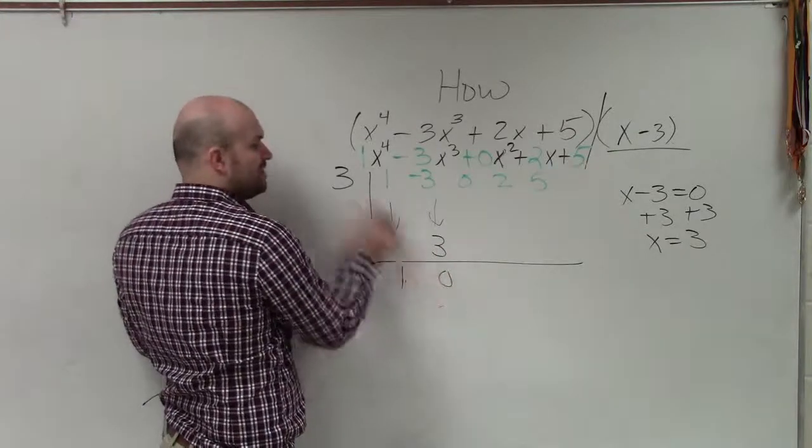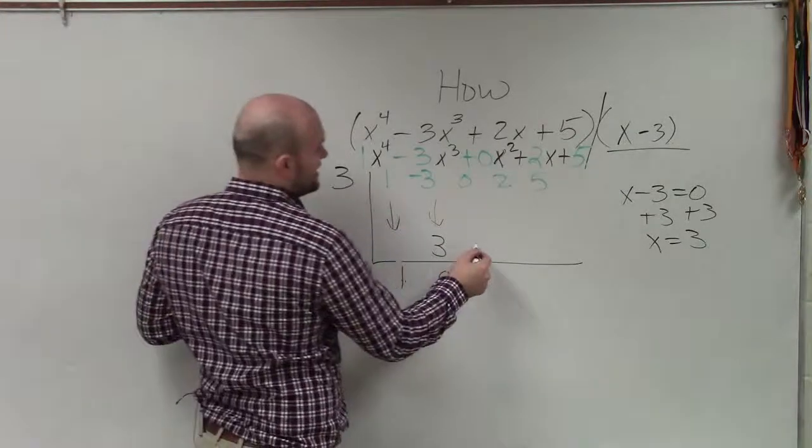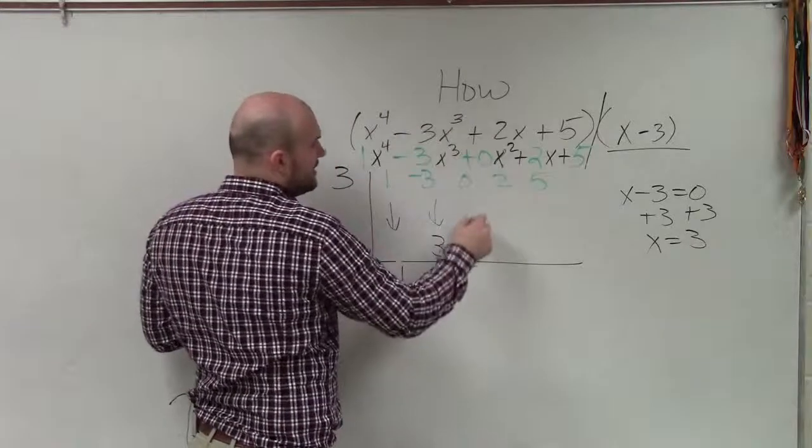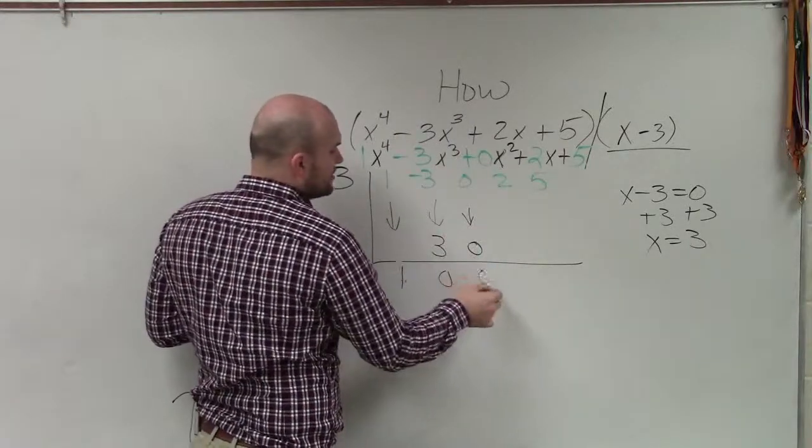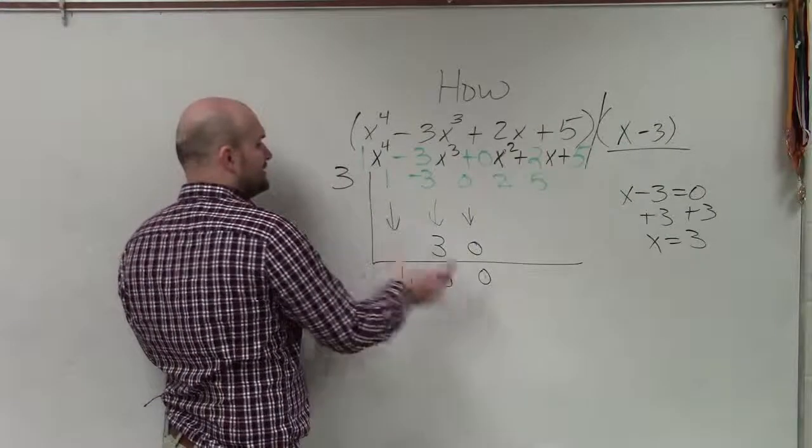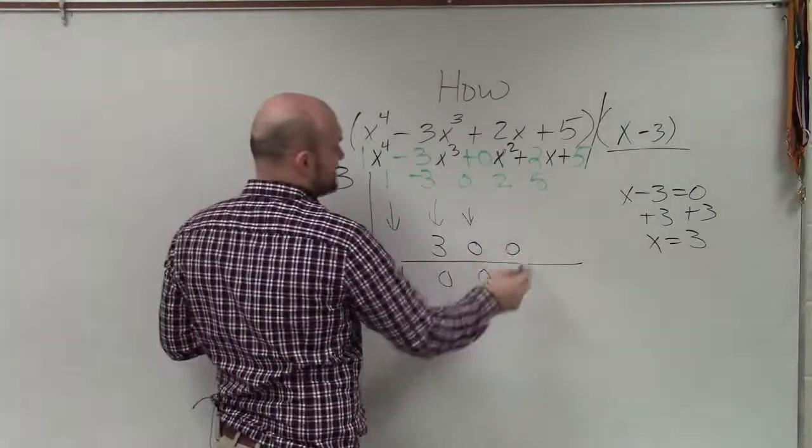Again, multiply vertically. 0 times 3 is 0. Again, add vertically. 0 plus 0 is 0. Again, multiply diagonally. 0 times 3 is 0.